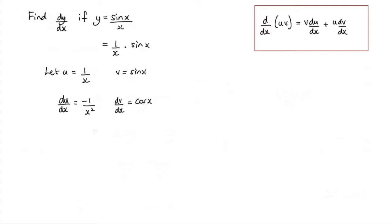So applying the product rule we have that dy by dx is equal to v times du by dx, so these two multiplied here which would be negative sin x over x squared, plus u dv by dx which would be cos x over x.